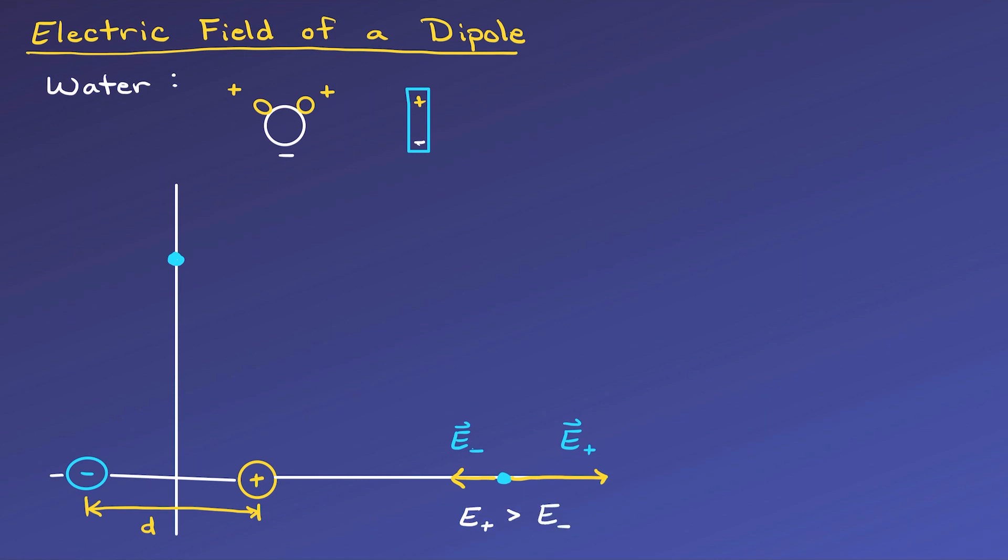This means they will partially cancel, but the closer charge will win and have some field left over since it's stronger. Above the origin on the axis running between the charges, the y components of each charge will cancel, while the x components will be equal and in the same direction, so we'll just find it for one and double it.